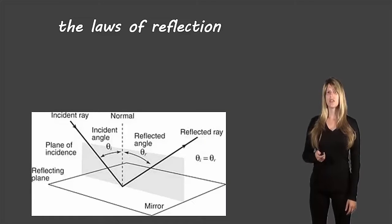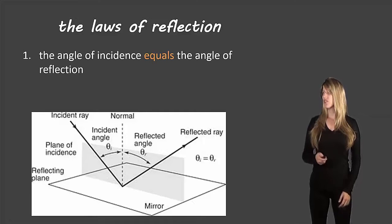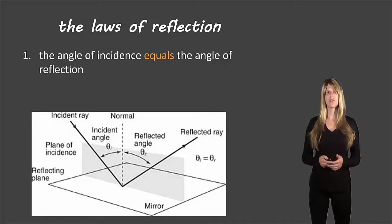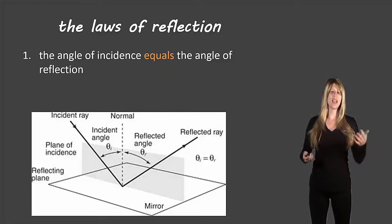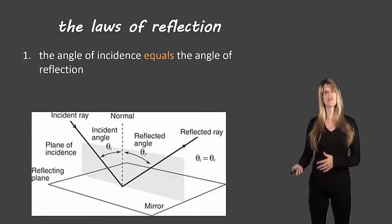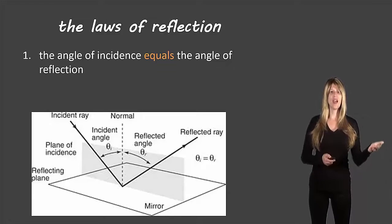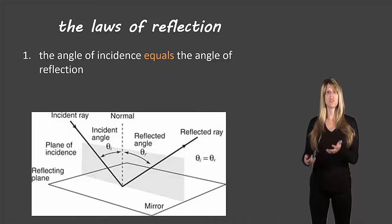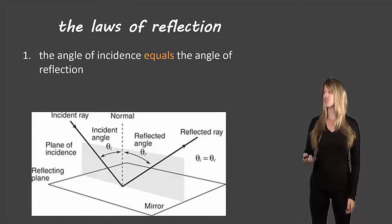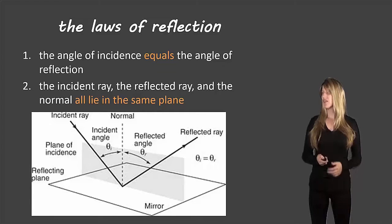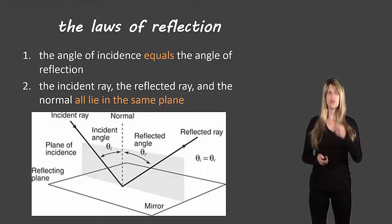Let's take a look at the laws of reflection. The first is that the angle of incidence equals the angle of reflection. That will always be the case — if the angle of incidence is 10 degrees, the angle of reflection will be 10 degrees as well. If it's 25 degrees, then the angle of reflection will also be 25 degrees. They're always equal to each other.